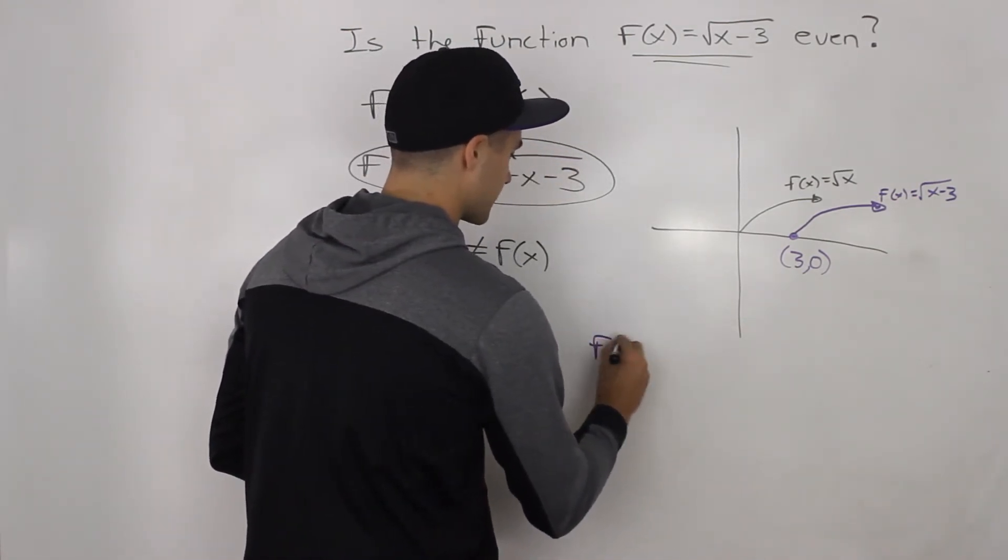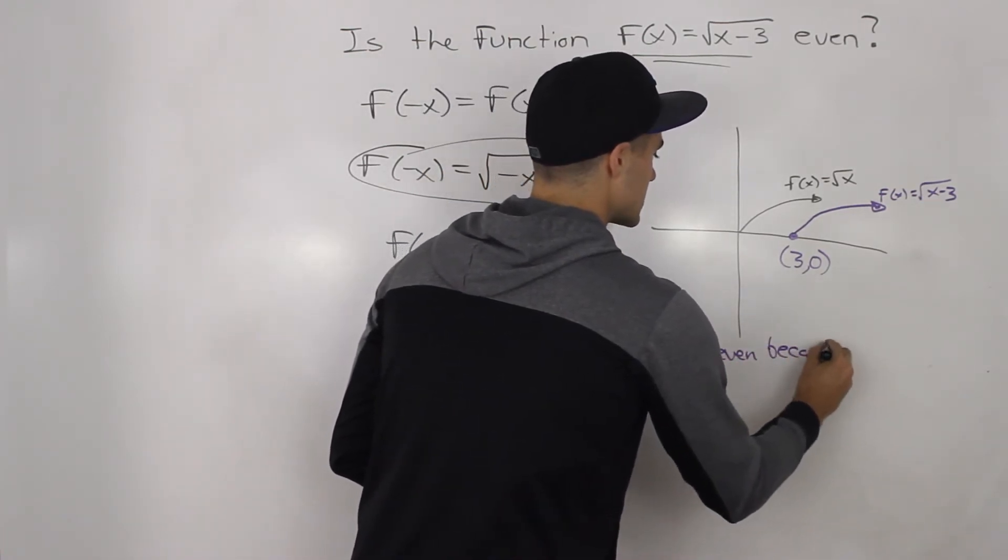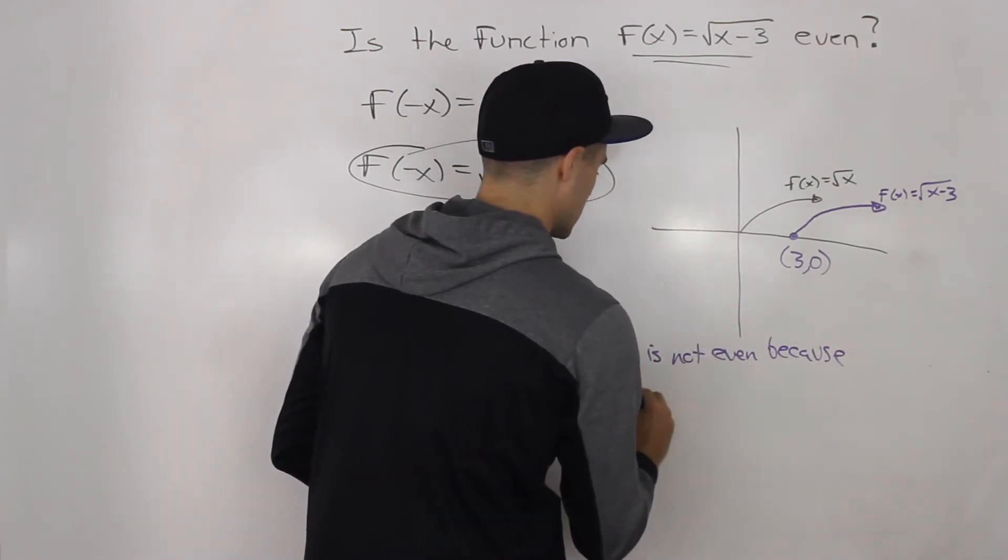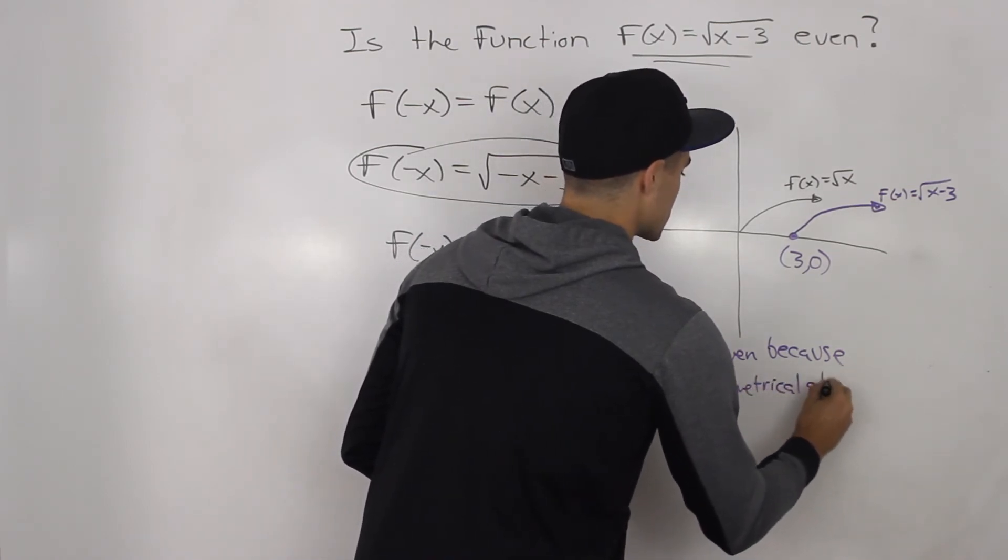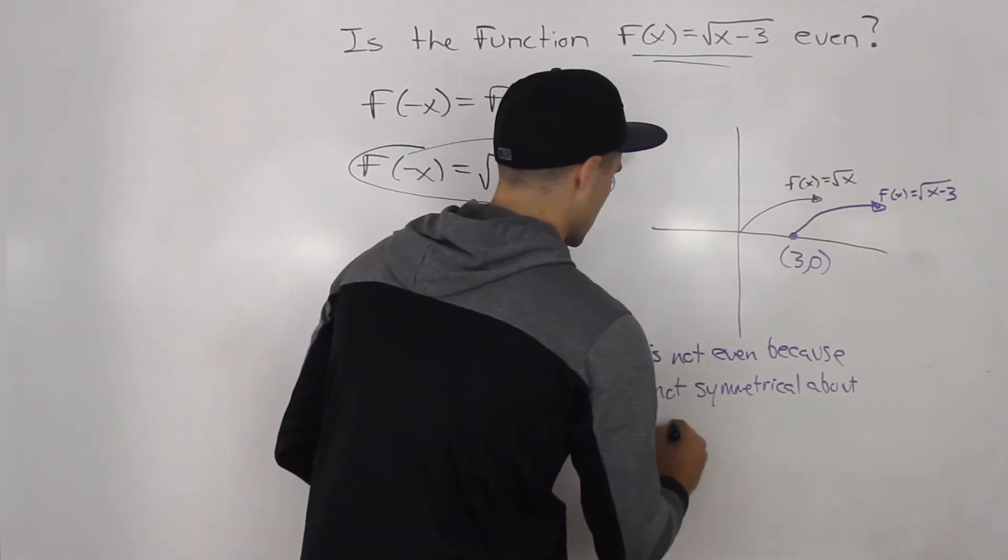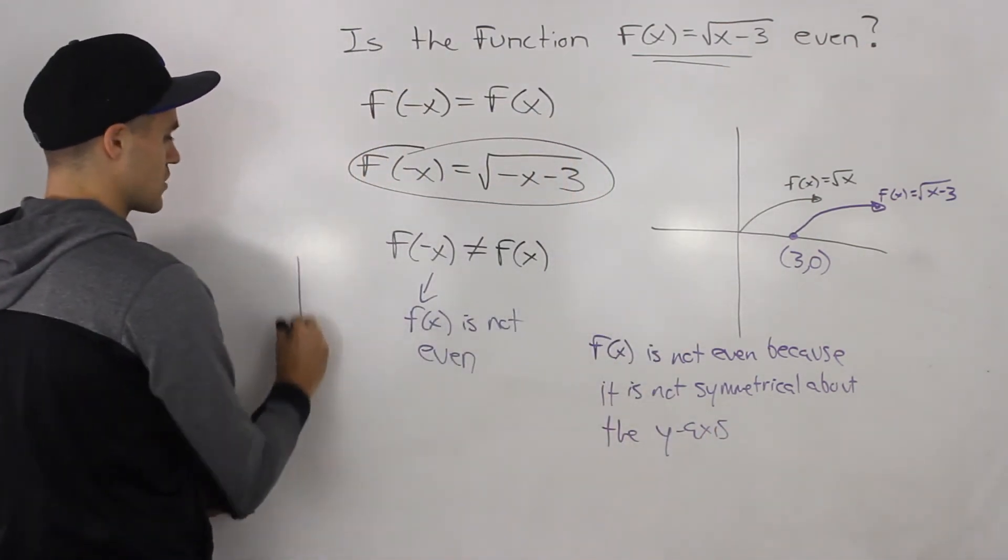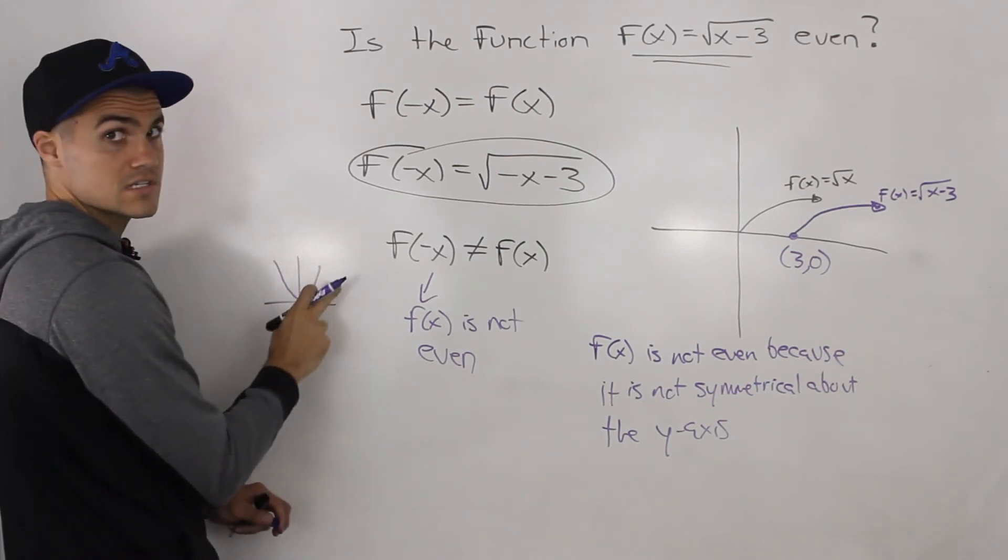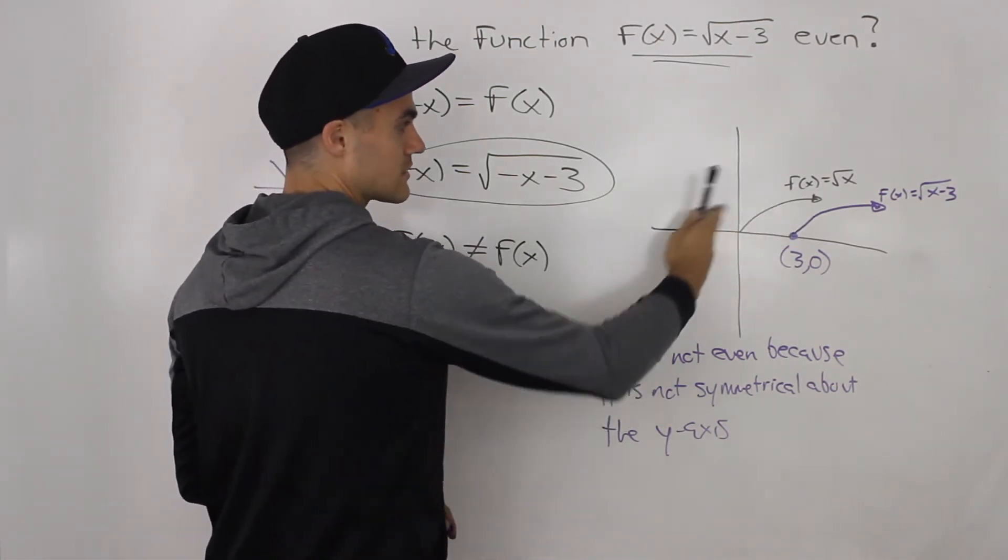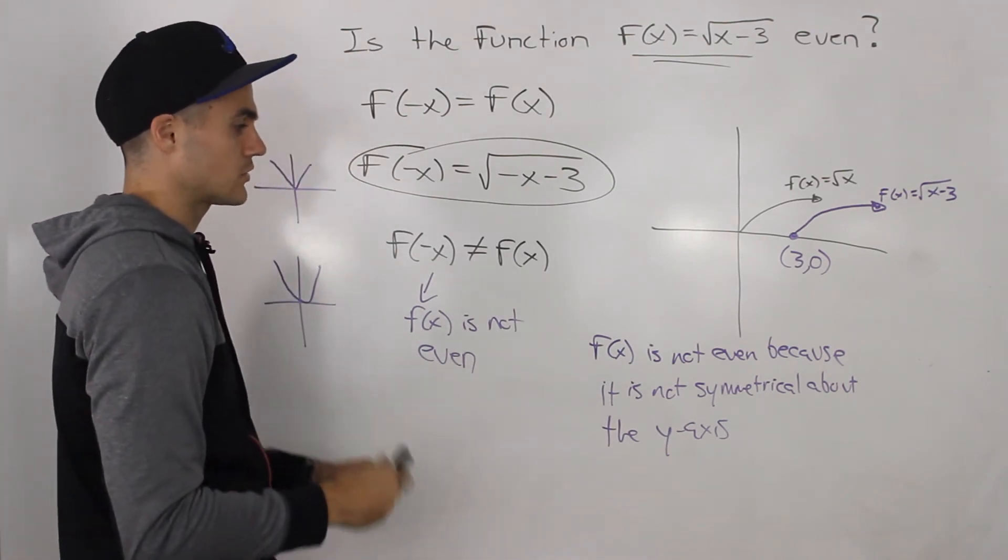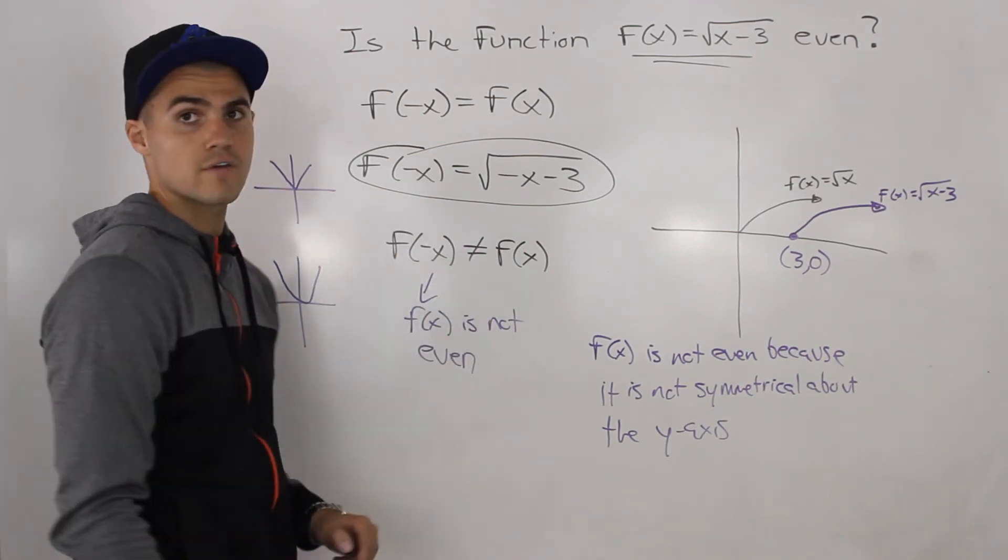So f of x is not even because it is not symmetrical about the y-axis. Even functions basically look the same on both sides of the y-axis. So, for example, x squared. Notice how it looks the same on both sides or the absolute value of x, right? This function here, there's not even anything to the left of the y-axis. So it's not symmetrical about the y-axis. So it's not even. Or algebraically, f of negative x does not equal f of x. So f of x is not even.